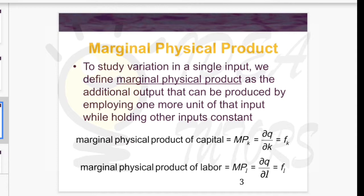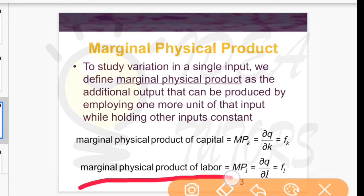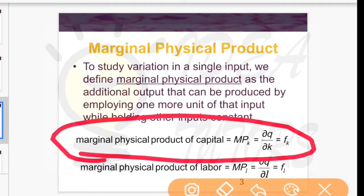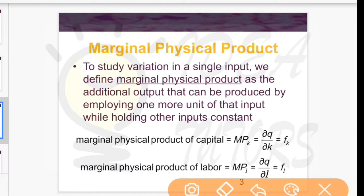To study variation in a single input, we define marginal physical product as the additional output that can be produced by employing one more unit of that input while holding other inputs constant. The marginal physical product of labor shows how output changes when one more unit of labor is employed, keeping capital constant.